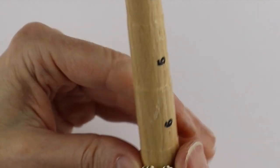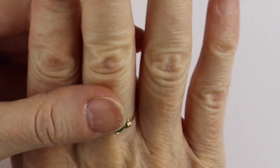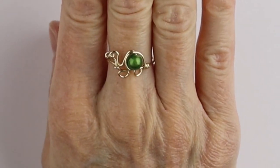Now you can put it back on the ring cone and just adjust it how you like. And there you have your super cute little turtle ring.